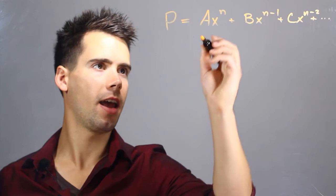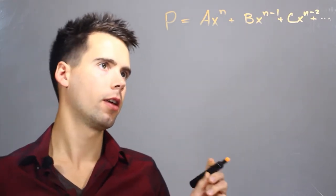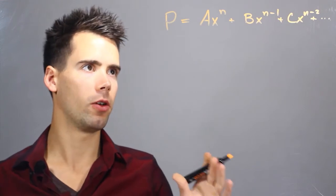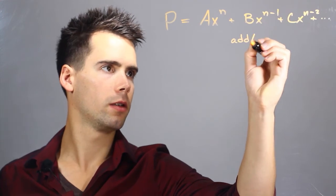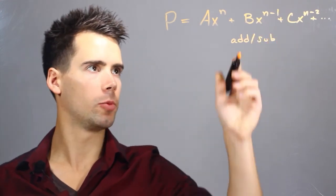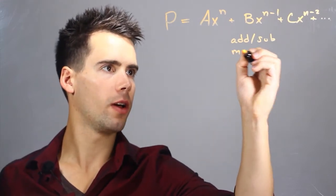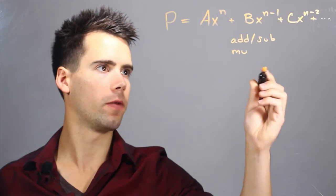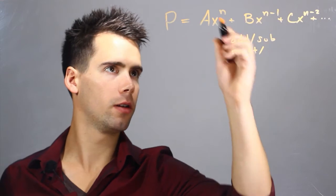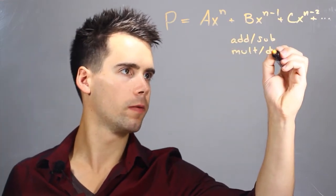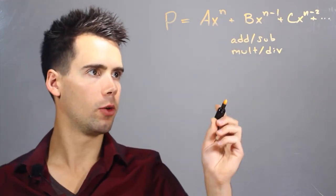Now what you should find is that a, b, c, etc. are all constant coefficients. Inside of this polynomial the only operations are addition or subtraction — that would just be the case of you having a negative coefficient — and you also have multiplication because you're multiplying the coefficients by each term. You can also have division if they're one over some integer, and the last step is that you just have exponents in the equation.